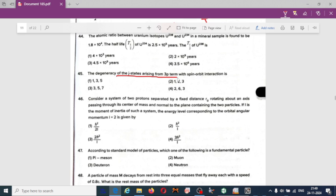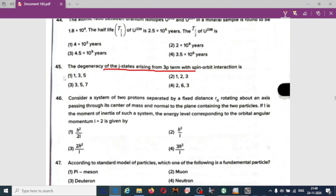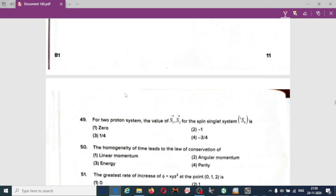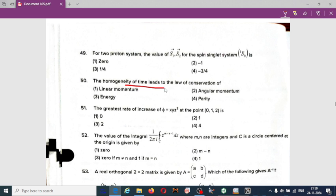The degeneracy of the j state arising from three p with spin-orbit interaction is: answer for this is one three five degeneracy of j state. According to standard model of particles, which of the following is a fundamental particle? You can choose from these two options. Homogeneity of the time leads to law of conservation of linear momentum, angular momentum, energy, parity. So answer is conservation of energy.